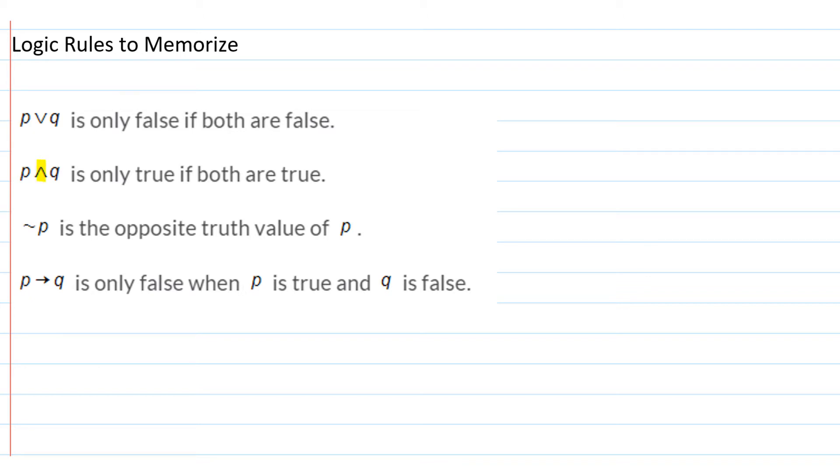The next symbol here is and. So that looks like an upside down V. P and Q is only true if both parts are true.